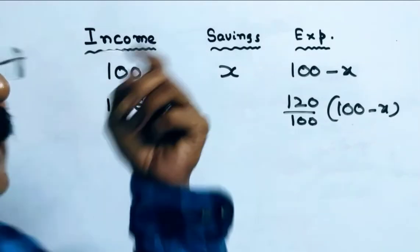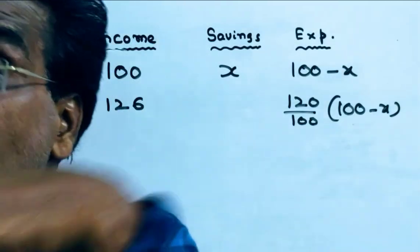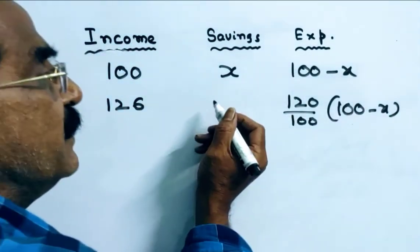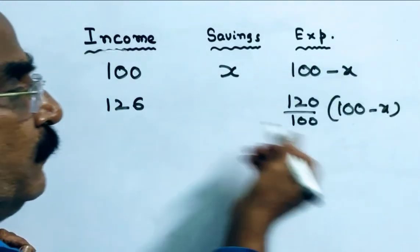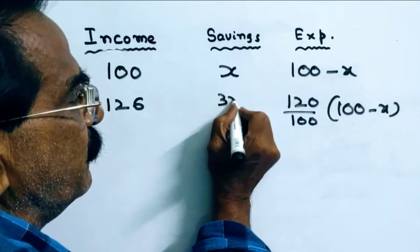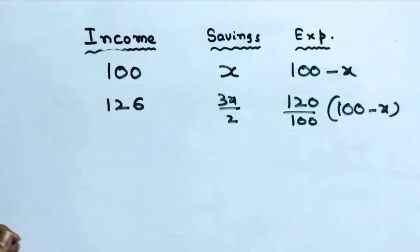Then, the savings is increased by 50 percent. So, savings increases by 50 percent means X plus X by 2. X plus X by 2 means 3X by 2.